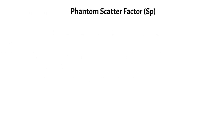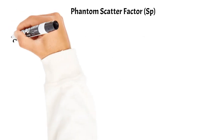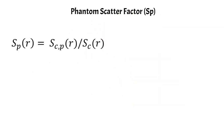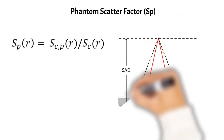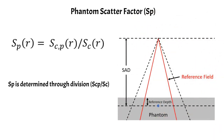Now we can talk about the phantom scatter factor, Sp. The reason it's introduced last is because there is no way to directly measure it — there's no way to differentiate a photon that originates in the phantom from one that originates in the treatment head. Because of that, we actually measure the total scatter factor and then determine the phantom scatter factor by dividing out the contribution from the treatment head. It's a factor we use in hand calculations, but we can't measure it directly; we have to determine it this way.